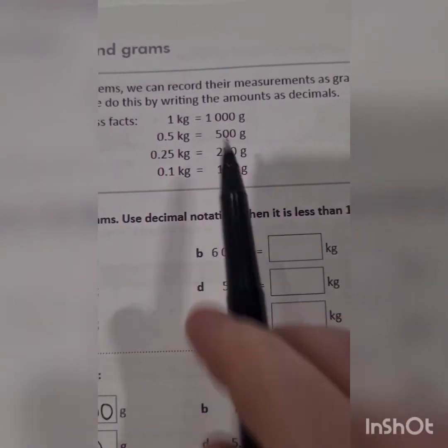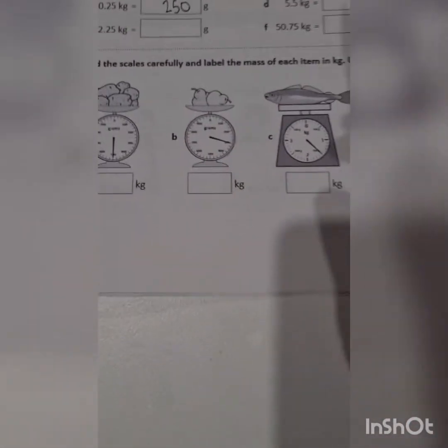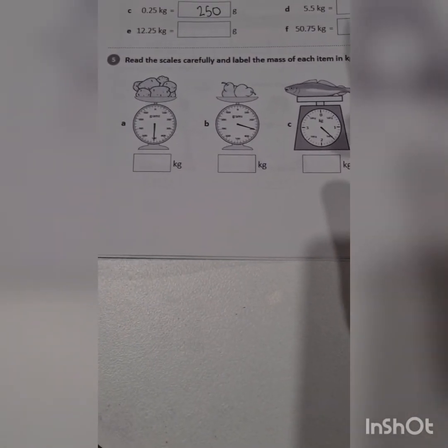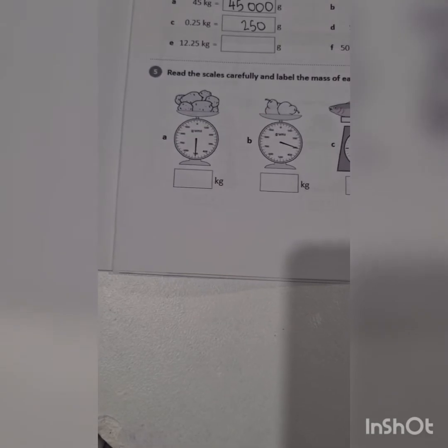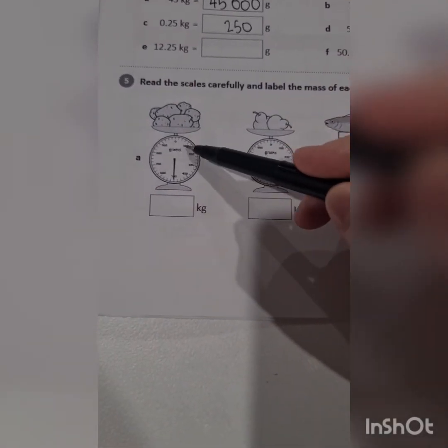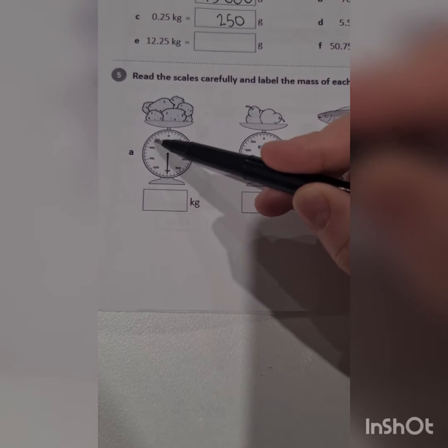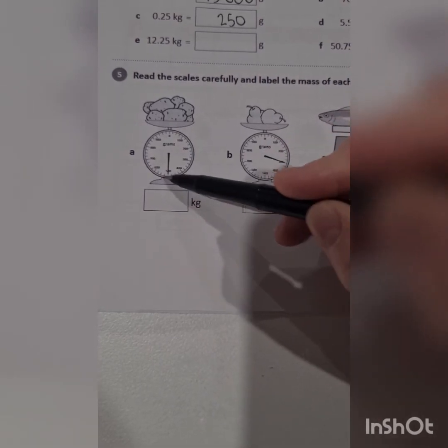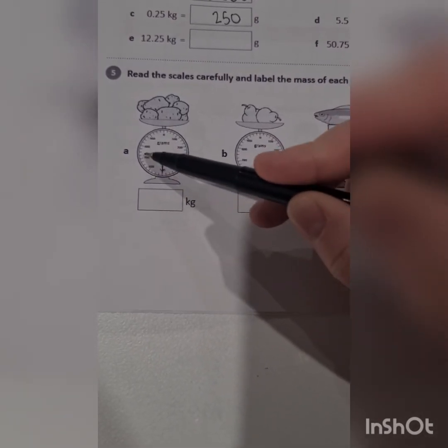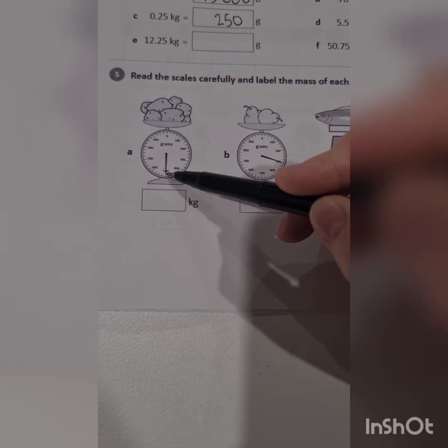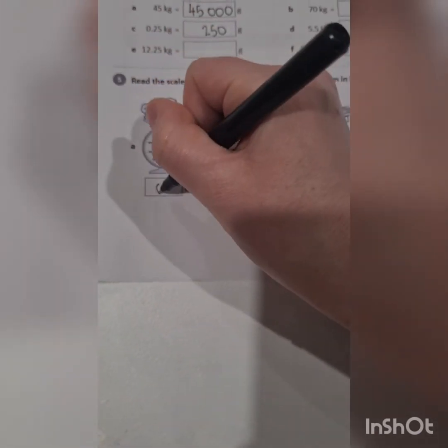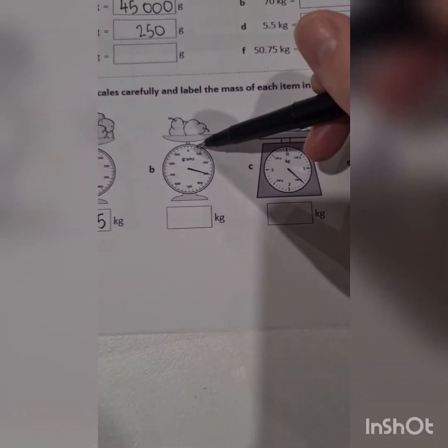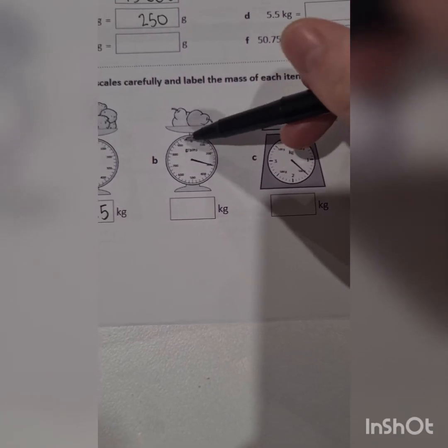Last question: read the scales carefully and label the mass of each item in kilos using decimals. So look at this scale first and I can see that this one is less than 1 kilo. It's 500 grams which is the same as 0.5 kilos. Same with this one, I haven't yet reached 1 kilo. It's on the 3, so it's going to be 0.3 kilos.